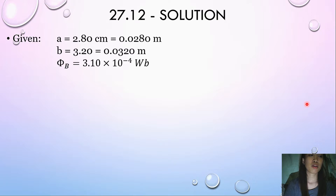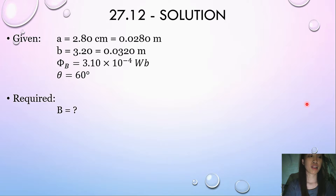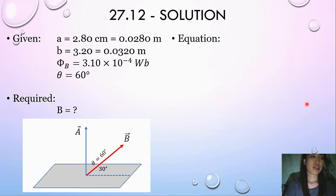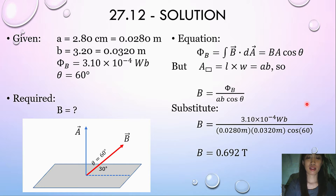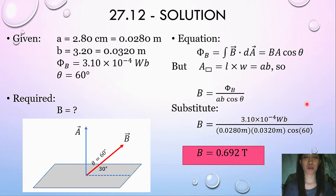We consider the rectangular horizontal surface with dimensions 2.80 cm by 3.20 cm, and we need to find the magnetic field magnitude that produces a flux of 3.10 times 10 to the negative 4 Weber, where the magnetic field makes an angle of 30.0 degrees from the horizontal. The area vector points perpendicular to the plane, which is vertical. Since the angle between the horizontal and the magnetic field is 30 degrees, the angle between the magnetic field and the area vector is theta equals 60 degrees. The magnetic flux is phi_B equals B·A·cosine(theta), where A equals length times width. Therefore, B equals phi_B over (A·B·cosine(theta)), giving us 0.692 Tesla.